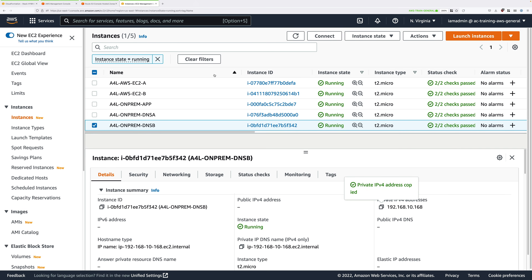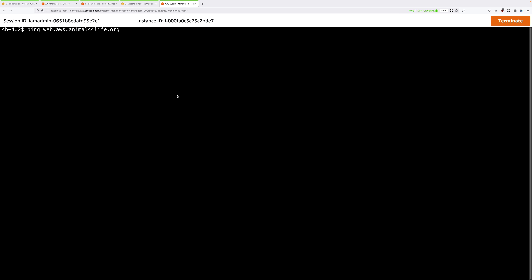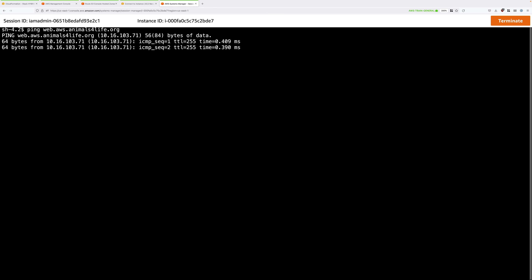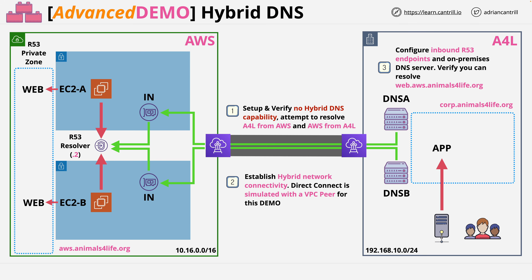Close that tab, give it a couple of minutes to restart, then right-click the app server, Connect, Session Manager, Connect again. Once at the terminal, type ping web.aws.animalsforlife.org and press Enter. You should now get both DNS resolution and a ping response. We have network connectivity between the simulated on-premises environment and AWS, and we've configured inbound DNS integration — the on-premises DNS servers forward queries to the Route 53 inbound endpoints, enabling successful ping responses.